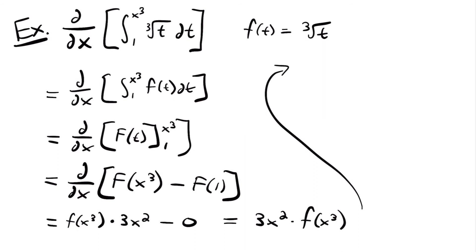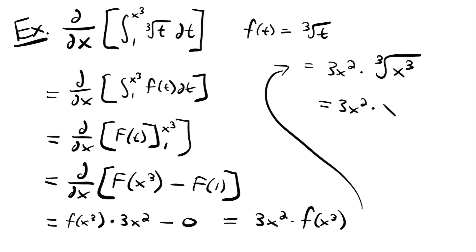That equals 3x squared times the function evaluated at x cubed. To find the final answer, we plug x cubed into f of t, which gives us 3x squared times the cubed root of x cubed. The cubed root of a cubed number is just that number, so cubed root of x cubed equals x. This gives us 3x squared times x, which equals 3x cubed. Notice that if you just plugged the upper bound into the function without multiplying by the derivative, you'd get only x — which would be incorrect.